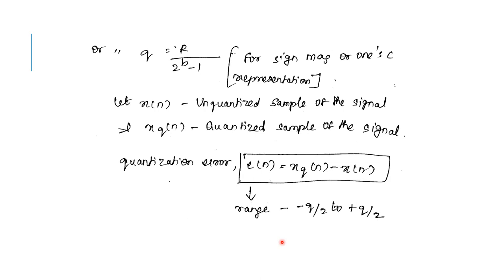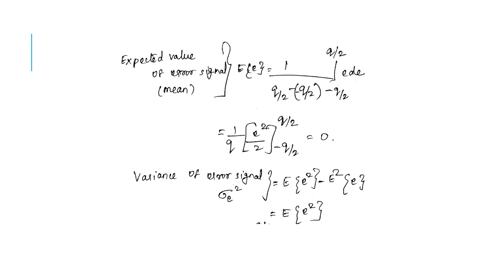In A to D converters, quantization can be performed by using either truncation or rounding. However, quantization by rounding is preferred in A to D converters due to the zero mean value of quantization error and lower variance when compared to truncation.